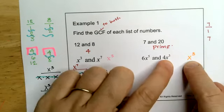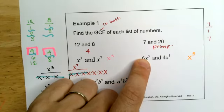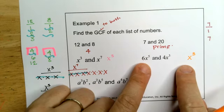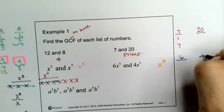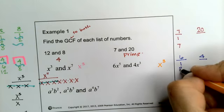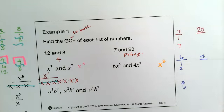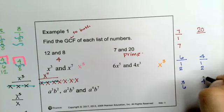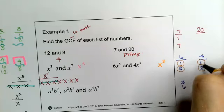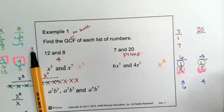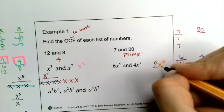If you have a number and a variable, you need to do both at once — find the greatest common factor of the numbers and the greatest common factor of the variables. So for 6x to the fifth and 4x cubed: factors of 6 are 1, 2, 3, 6; factors of 4 are 1, 2, 4. Common factors are 1 and 2, so the greatest common factor of the numbers is 2. For the variables, x to the fifth and x cubed — take the smallest exponent, which is x cubed. So the greatest common factor is 2x cubed.